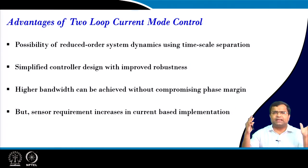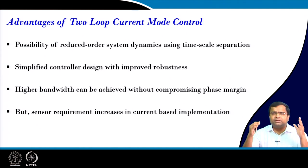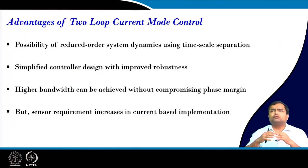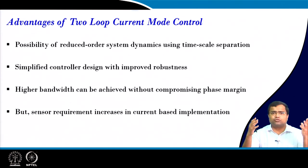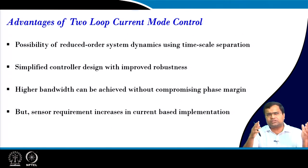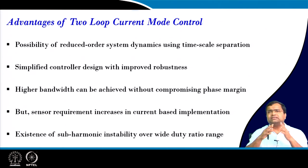For high frequency applications there can be problems in current sensing. In integrated circuit implementations you can use various current sensing techniques — for example, sensing the high side current by means of R_DS(on) of the switch, or using a current mirror. Depending on the type of current mode control — peak current mode control, valley current mode control, or average current mode control — you need to sense the current accordingly. For peak current mode control in a buck converter you need to sense the high side current; for valley current mode control you sense the low side current, which is much easier. That is why the latest commercial products are moving towards constant on-time current mode control.